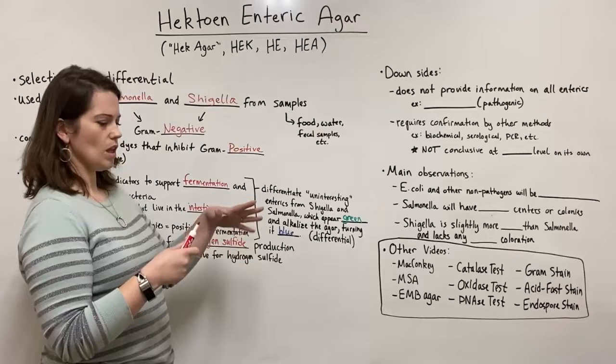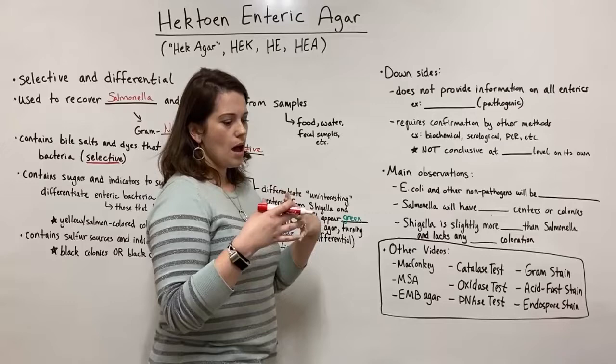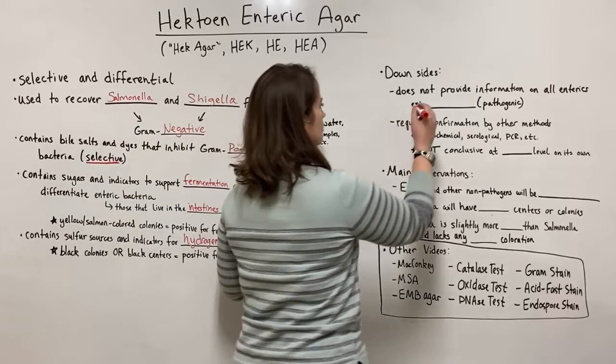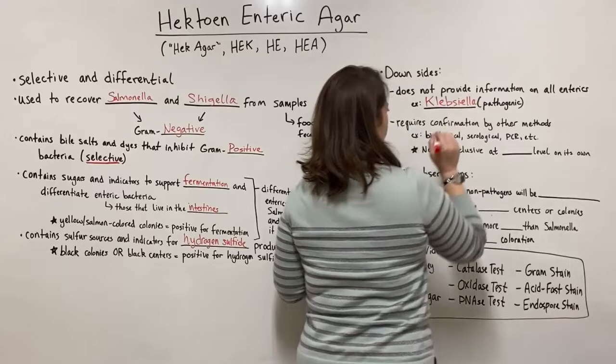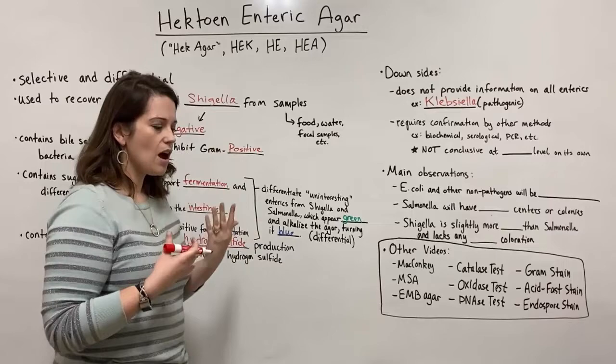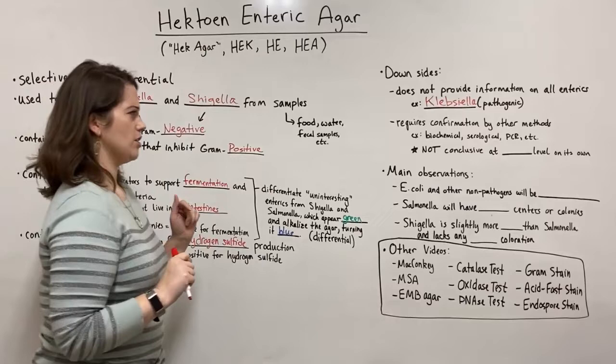Let's briefly talk about some downsides to Hektoen agar. First, it does not provide information on all enterics. There can be bacteria in a person's gut that Hektoen agar won't tell you anything about. One notable example is Klebsiella, which is a pathogen. So if a person is infected with Klebsiella, Hektoen Enteric Agar is not going to allow a doctor to learn about that Klebsiella infection. It's really only useful when someone is looking for Salmonella or Shigella.